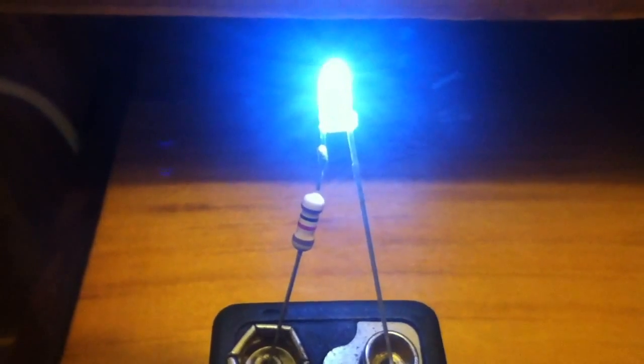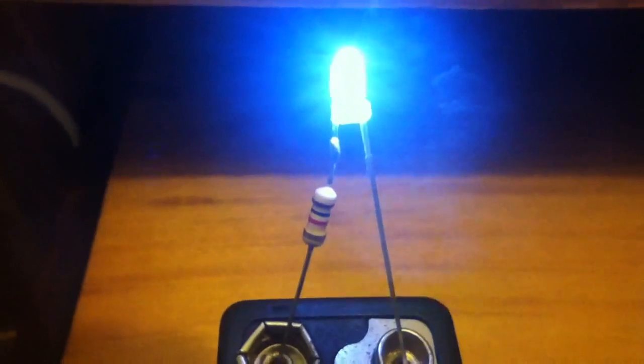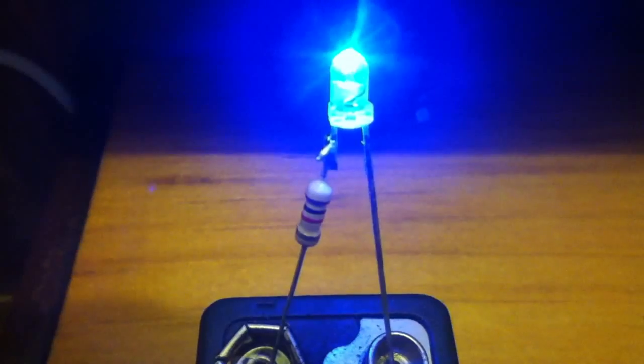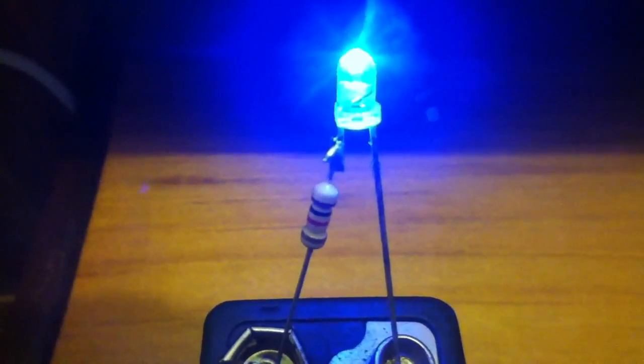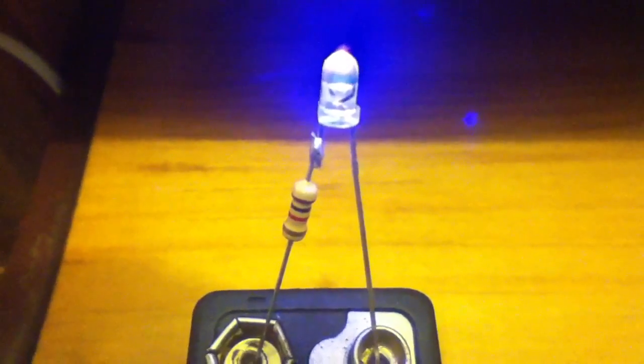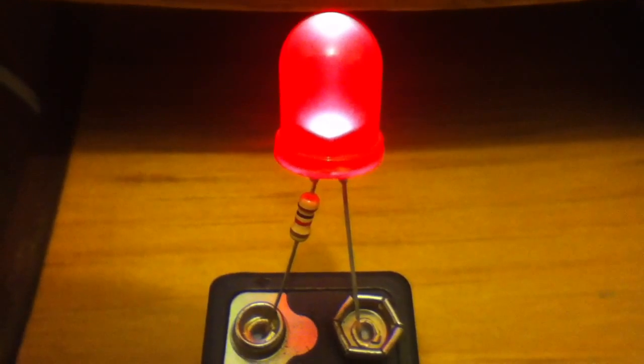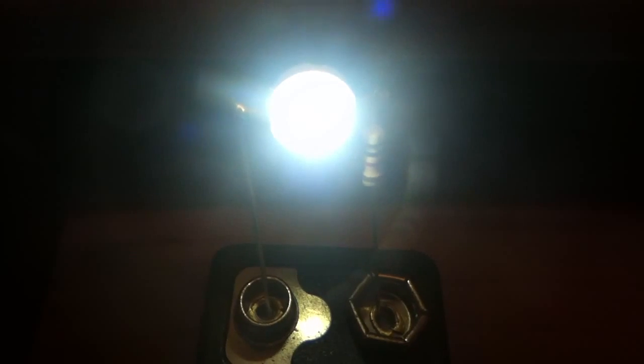A 1K resistor will work on most LEDs including white, green, blue, ultraviolet, and great big LEDs like this one. It even works on this one watt high power LED.